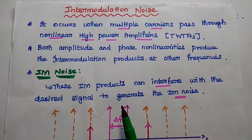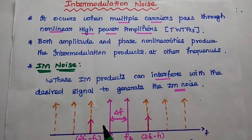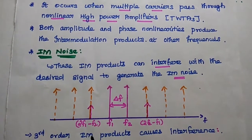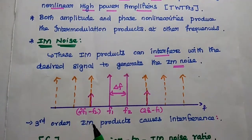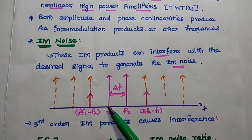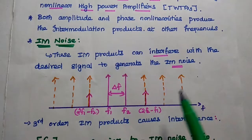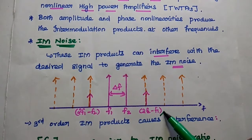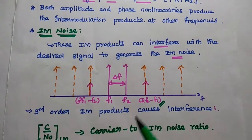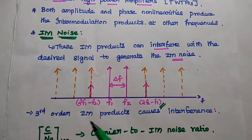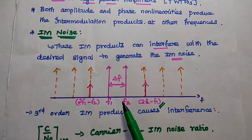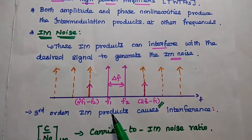At different frequency ranges, that is called intermodulation noise. These intermodulation products can interfere with the desired signal to generate the intermodulation noise. Here we can see the third order intermodulation products cause interference in this frequency range.